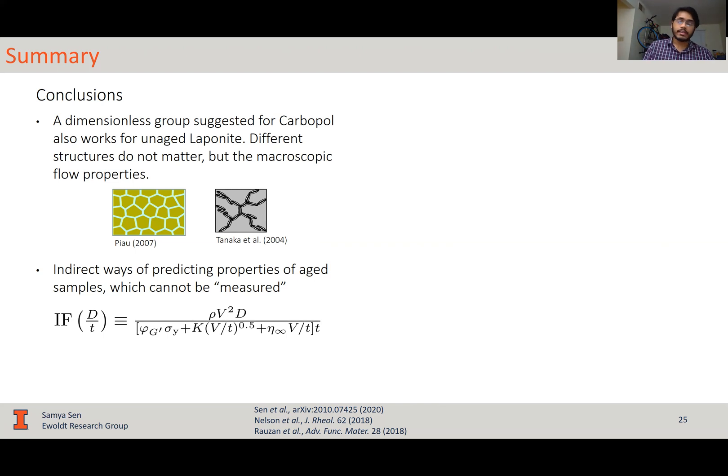Also, we showed some indirect ways of predicting properties of aged samples, which cannot really be measured, per se, using conventional rheology, because any shearing you do breaks down the structure and you will not be measuring the flow properties for the aged samples. And in this case, modifying the dimensionless group by only increasing the yield stress by a factor of by how much G prime changes was found sufficient to capture the effects of aging.